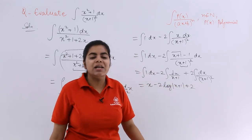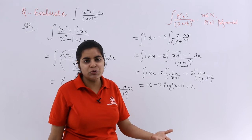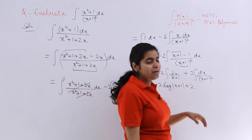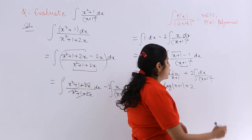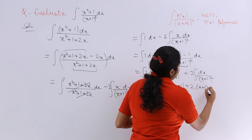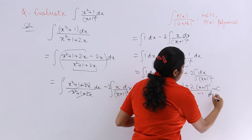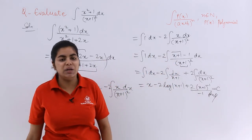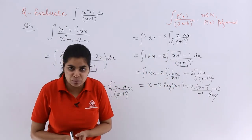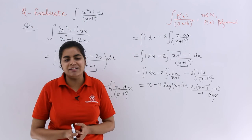It is (x + 1) raised to the power minus 2, basically, if I want to shift into the numerator. (x + 1) raised to the power minus 2, so it becomes (x + 1) raised to the power minus 1 upon minus 1, plus c. You know how did I integrate? By the power formula. So this is how you do these type of questions based on the first standard integral.